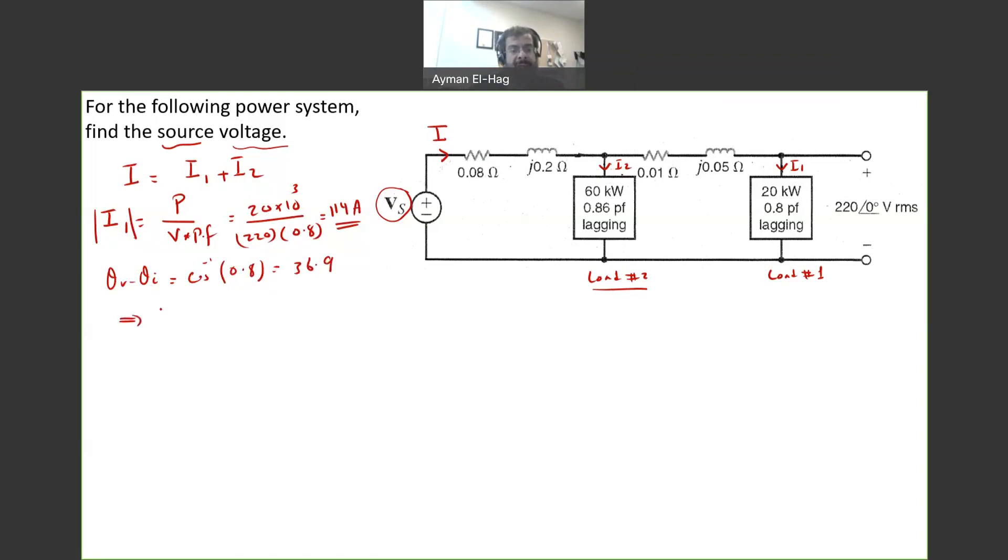So theta V minus theta I is equal to the cosine inverse of 0.8, which is equal to 36.9. From this, your theta I, because theta V is equal to 0, equals minus 36.9. And from this, your I1 is equal to 114 angle minus 36.9. So far, nothing changed.